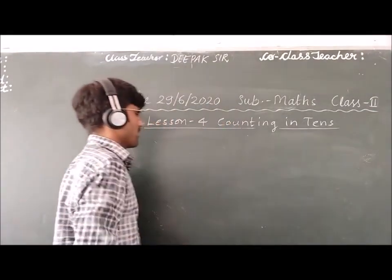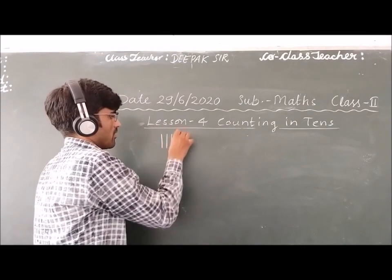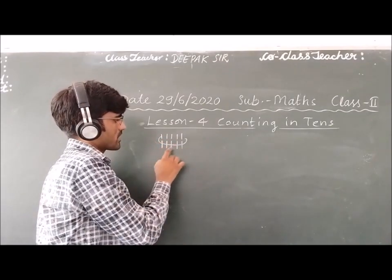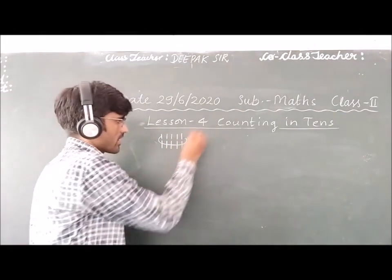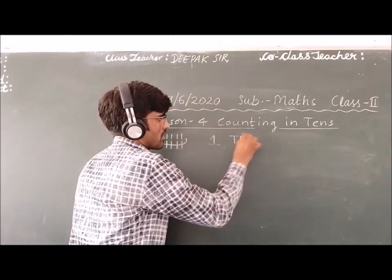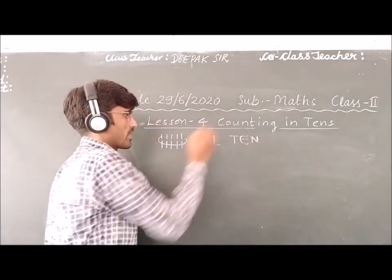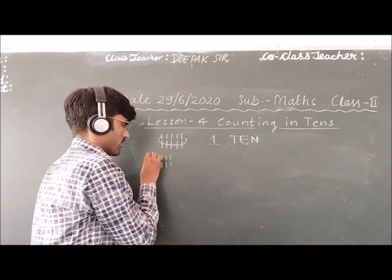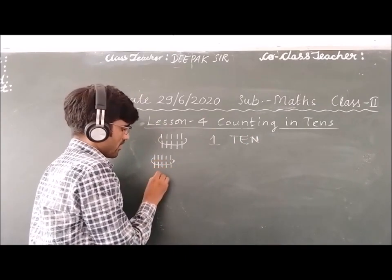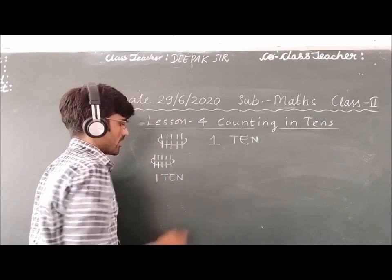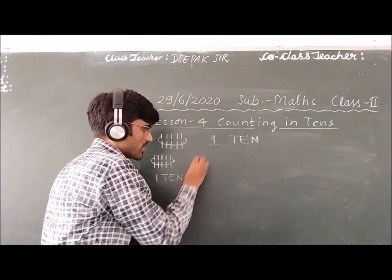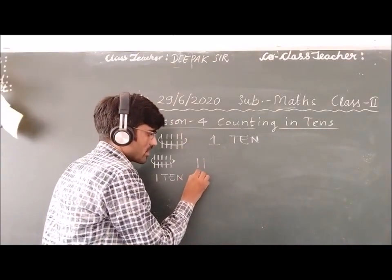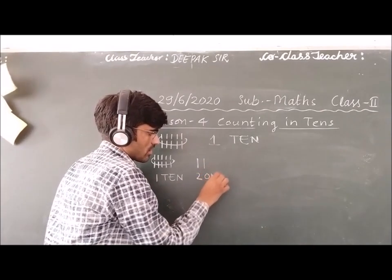If you have 10 lines, then we will say one ten. If you have this one ten, then we will read it along with two more lines — two lines means we will read it like two ones.